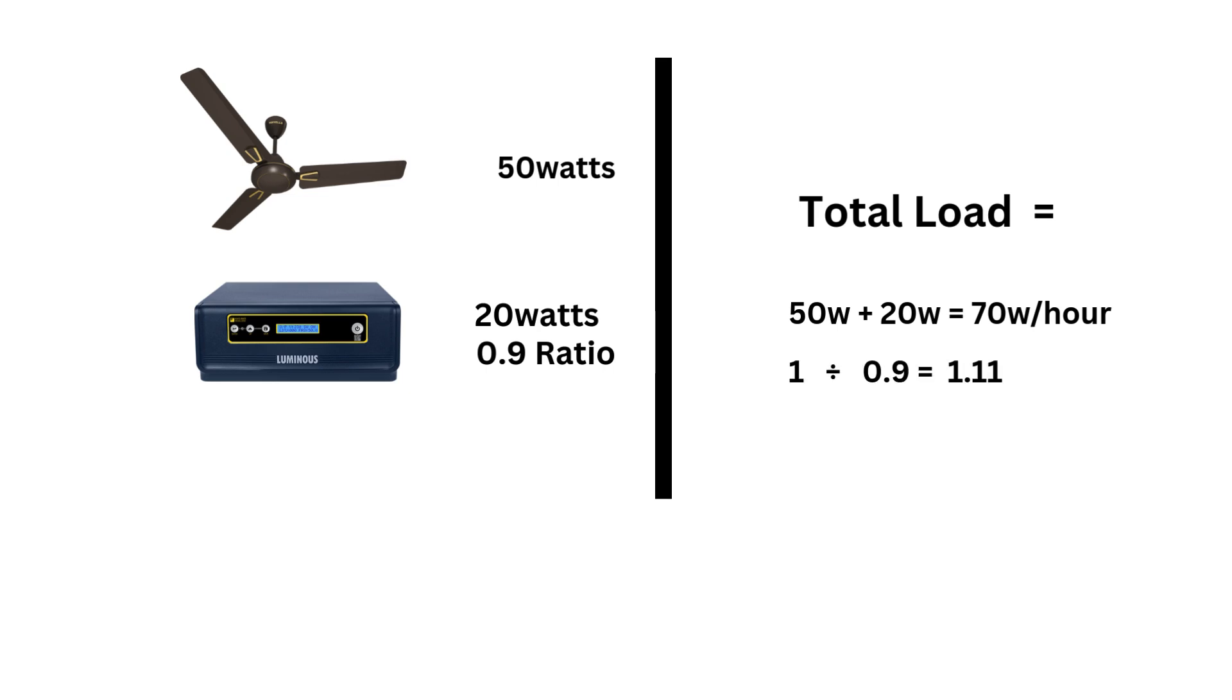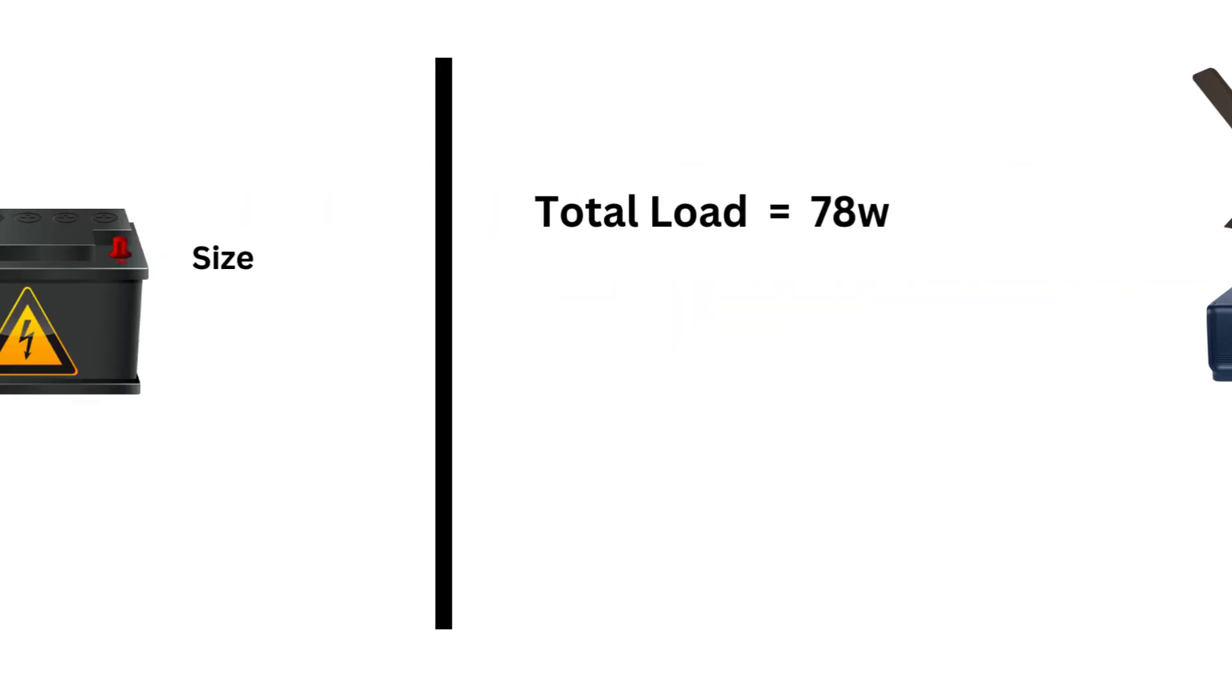Let's factor in inverter efficiency. Thus, we have a safety factor of 1.11, which if we multiply by 70 watts, we get 77.8 watts. We approximate this to 78 watts of power in one hour.